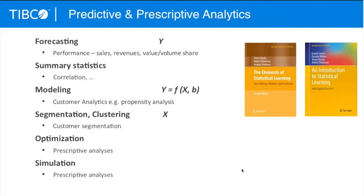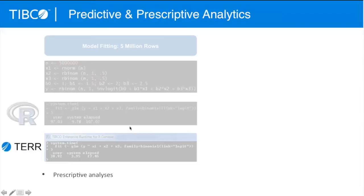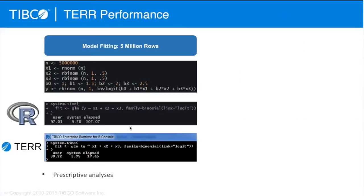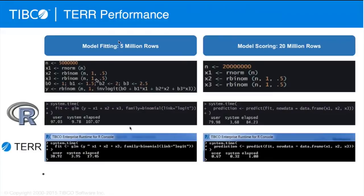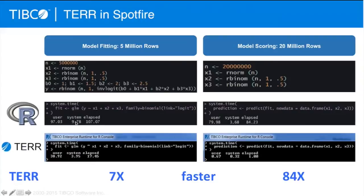We use this Runtime R engine for all types of things — ETL and so on — but a lot of the value people are interested in is from predictive analytics: forecasting, summary stats, modeling, segmentation, and so on. Looking at the performance gains, we're fitting 5 million rows in a logistic regression and scoring 20 million rows. We're somewhere between 10 and 100 times faster in our Runtime R engine — the TIBCO engine — versus the open source R engine.